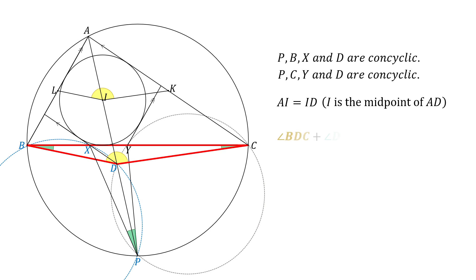Now we can finish the proof. Angle BDC plus angle DBX plus angle DCY is 180 degrees. We have proved that angle BDC equals angle KIL, angle DBX equals angle DPX, and angle DCY equals angle DPY. The sum of angle DPX and DPY is equal to angle XPY. Finally, angle KIL plus angle XPY equals 180 degrees.